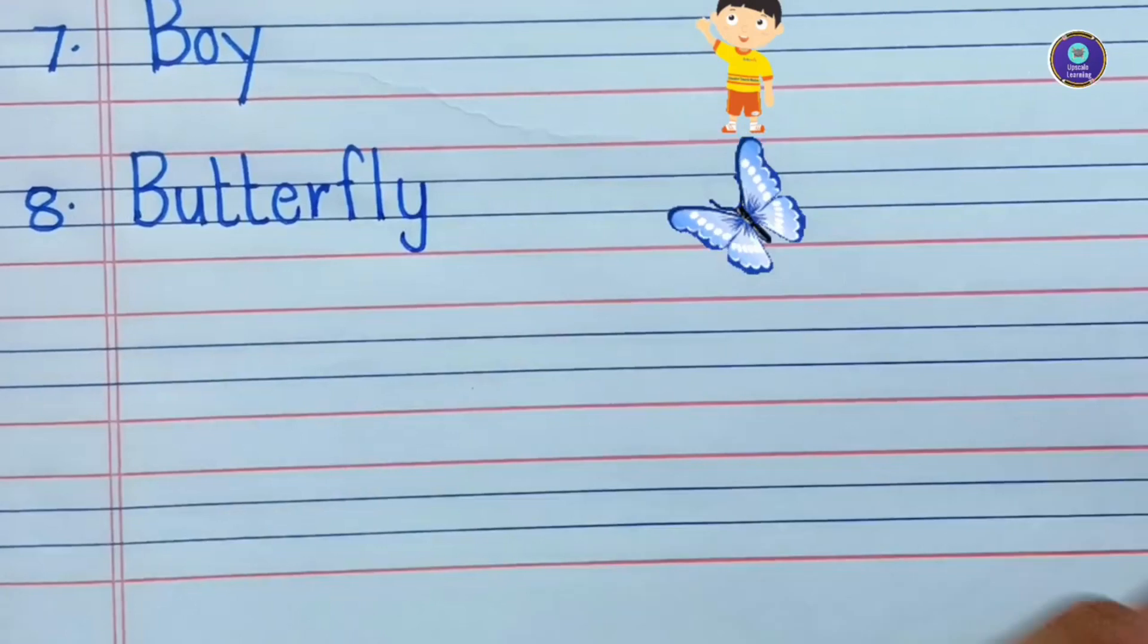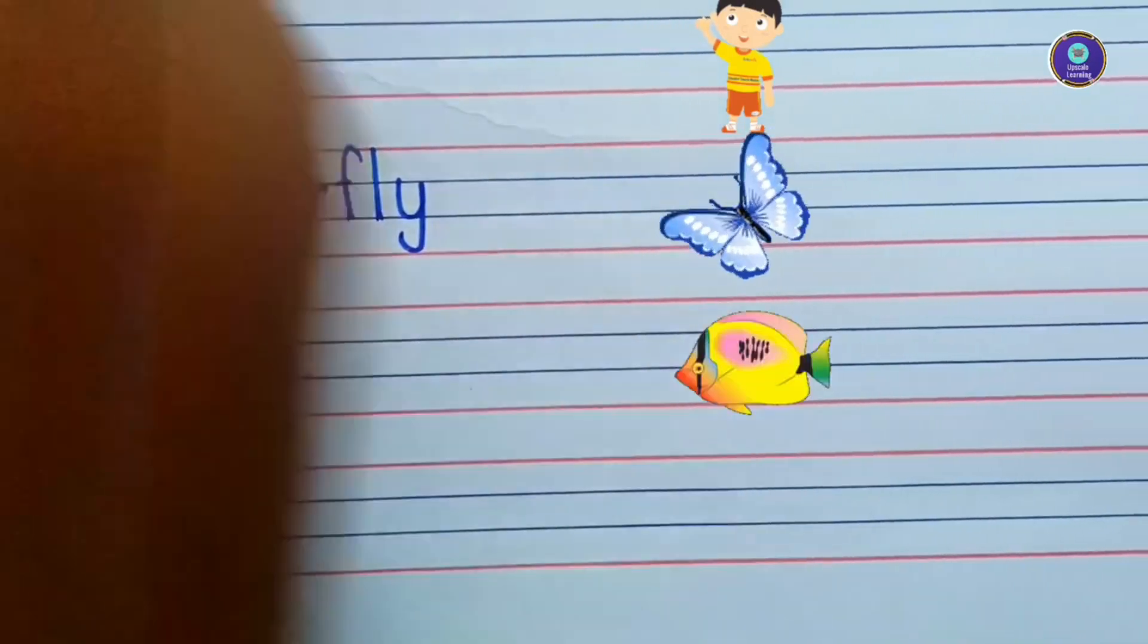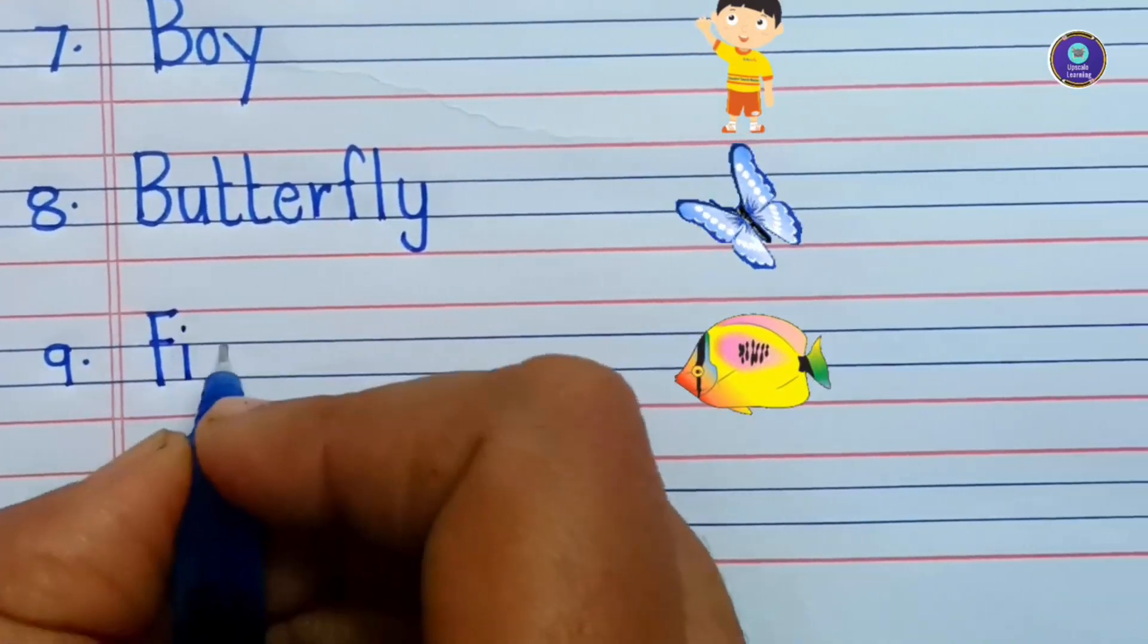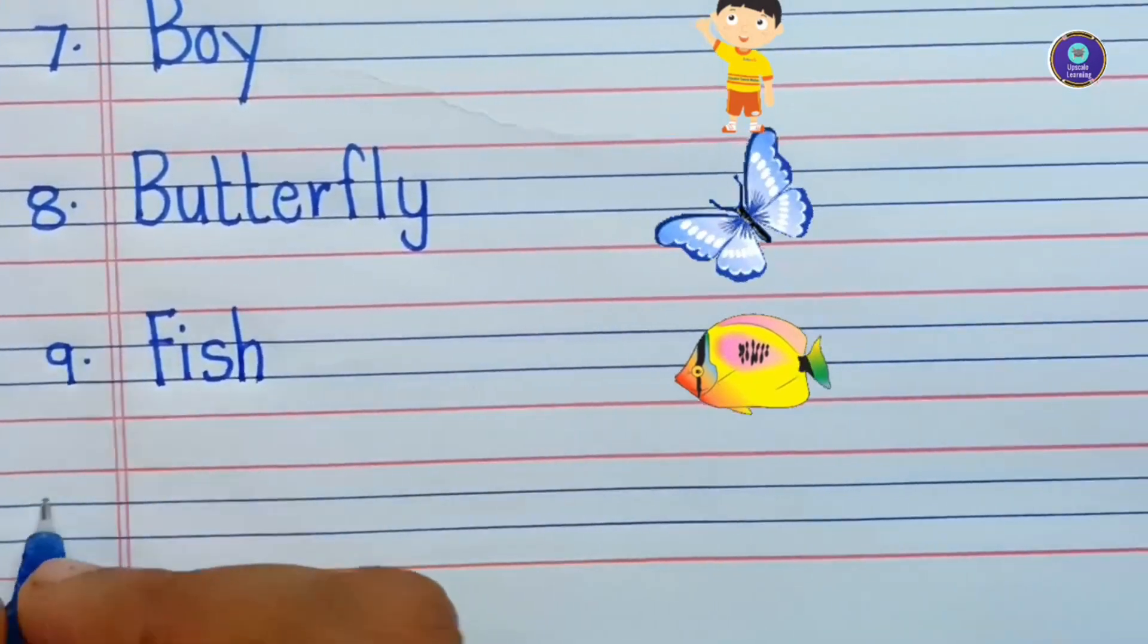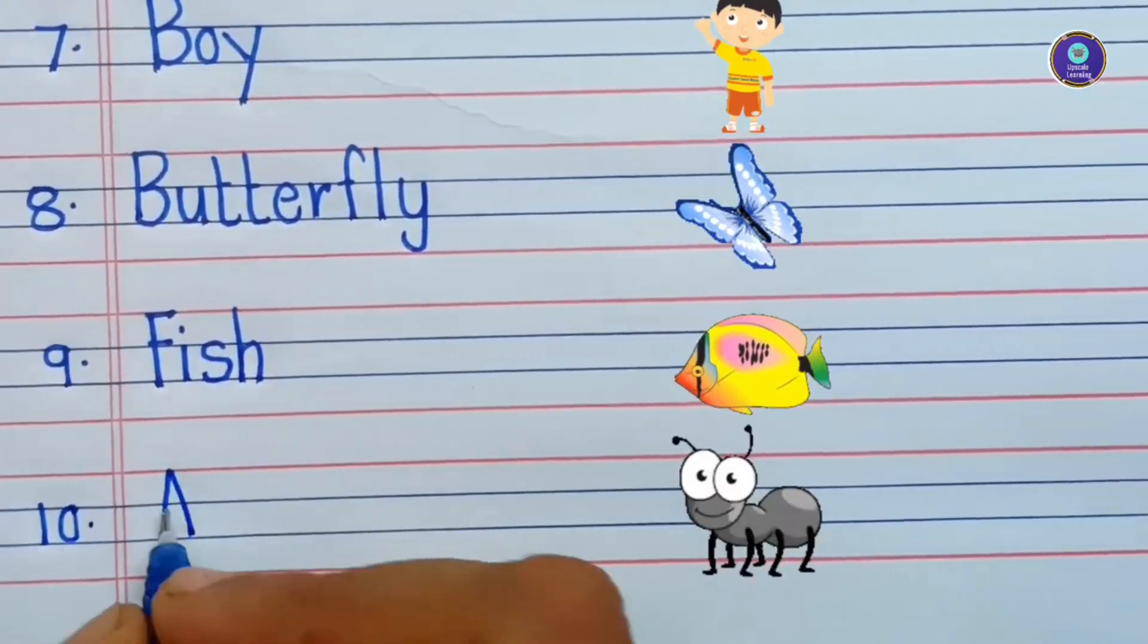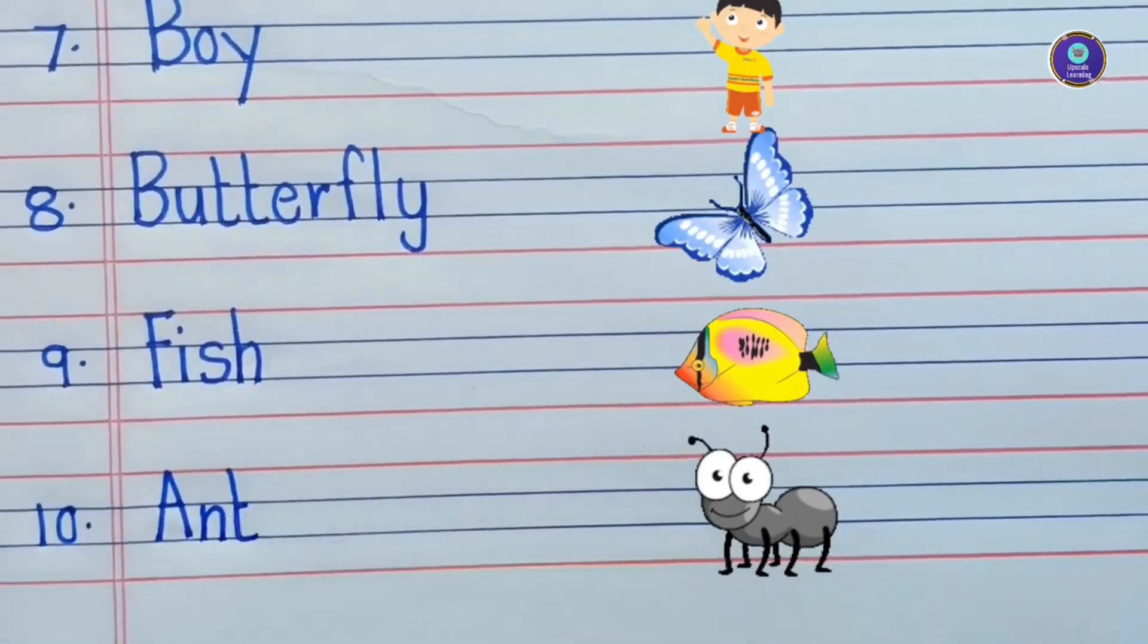Ninth one is fish. F-I-S-H, fish. Tenth one is ant. A-N-T, ant.